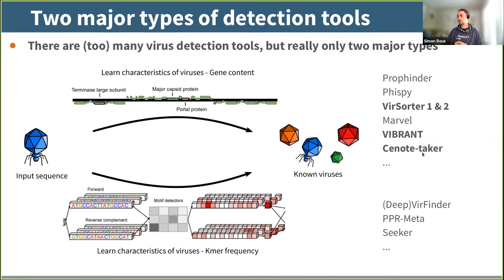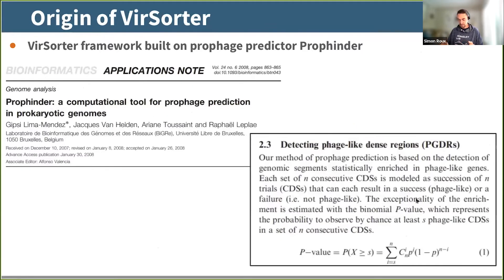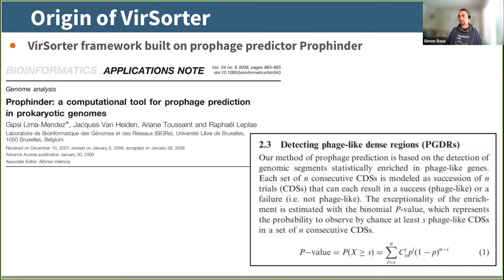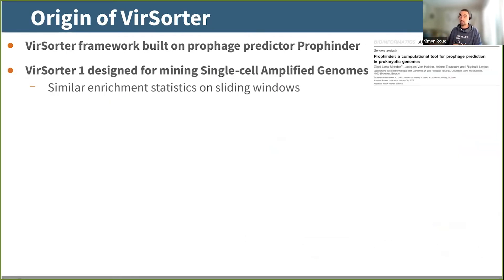Just to reiterate, VIBRANT, CNOT-Taker, and VSorder2 fall into the gene-content category, but I'm happy to talk about the k-mer approach in the panel session. So where does VSorder2 come from? Originally we built from the ProFinder tool, published in 2008 by Gypsy Lee-Merendez, Jack Van Helden, Ariane Toussaint, and Raphael Leplay. The idea at the time was to work from complete bacterial genomes and find phage-like dense regions, developing a statistical framework to robustly identify regions of bacterial genomes that had more phage genes than the background. That's what we incorporated into VSorder1.